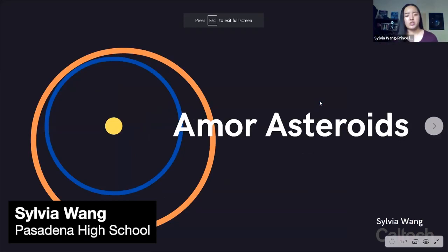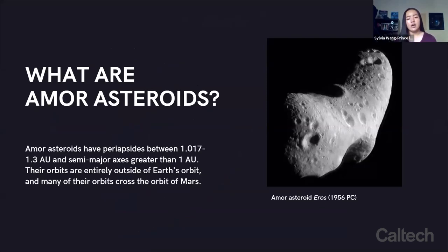I did my research on Amor asteroids, which is another category of near-Earth asteroids. These asteroids are categorized by having periapses — the plural of periapsis, which is the closest point you get to the sun — between 1.017 and 1.3 AU. Astronomical units are the distance between the Earth and the sun. The vast amount of resources I could access for free came from the Minor Planet Center, and I was also able to access many papers through Caltech.